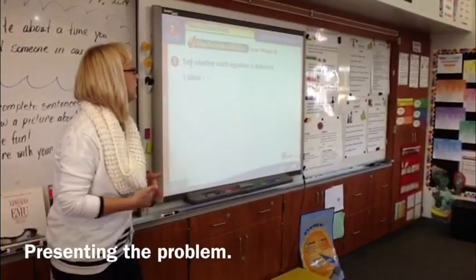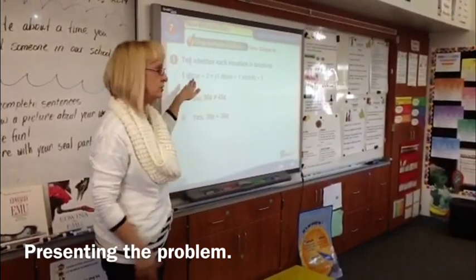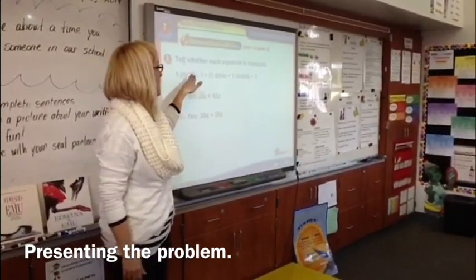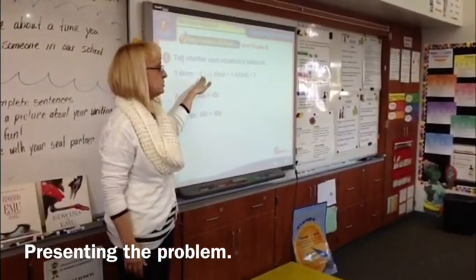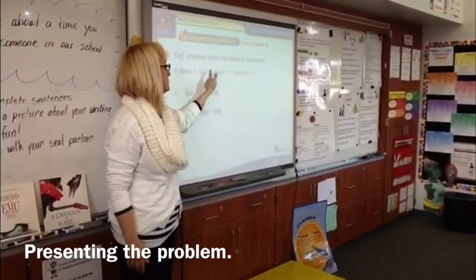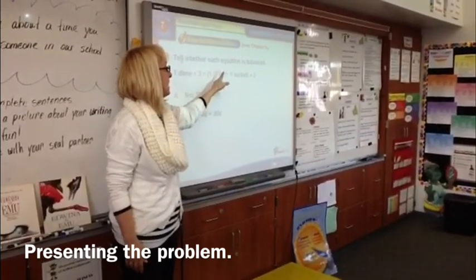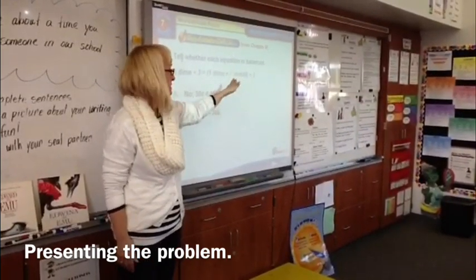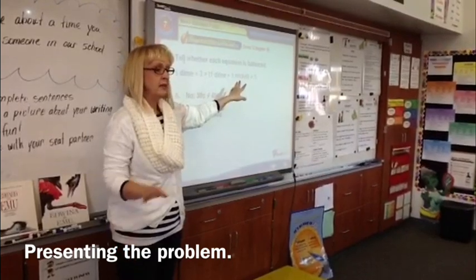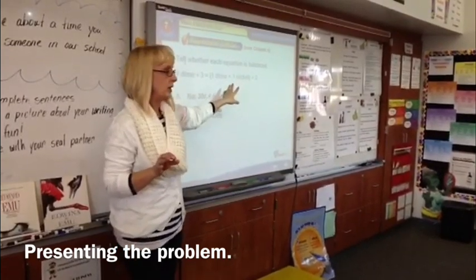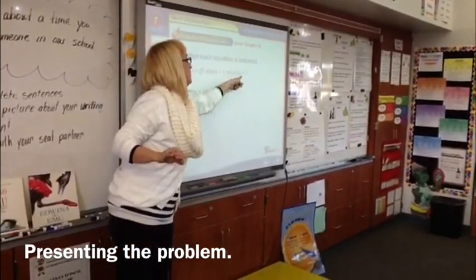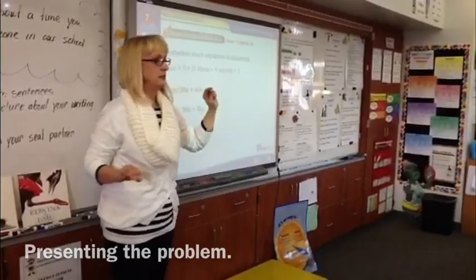Remember, I want to hear discussion. This is what you're solving: one dime times three equals, parenthesis, one dime plus one nickel, parenthesis, times three. Let me just ask a quick question — what do these mean? What do the parentheses mean? Tell your partners.